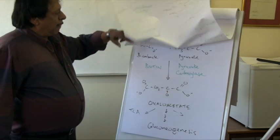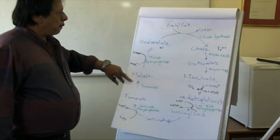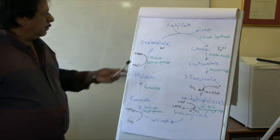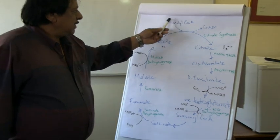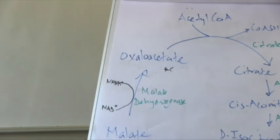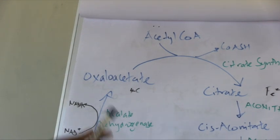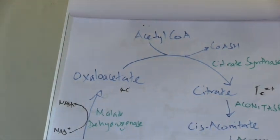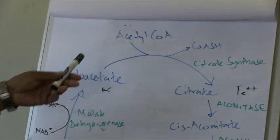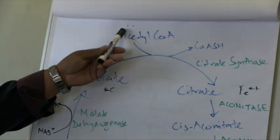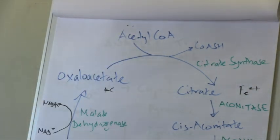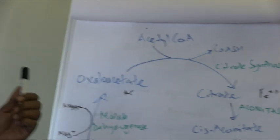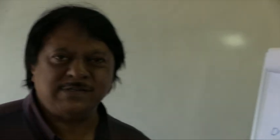One important point: acetyl coenzyme A cannot go back to glucose. The simple reason is that acetyl-CoA results from a decarboxylation reaction, which is irreversible. Therefore, we cannot convert acetyl-CoA to glucose.